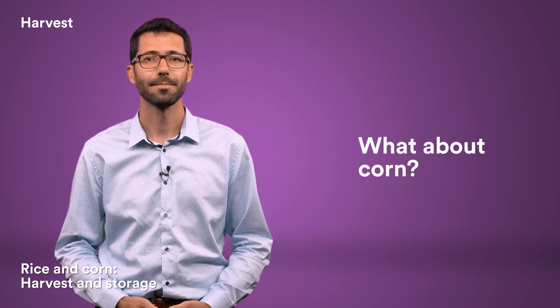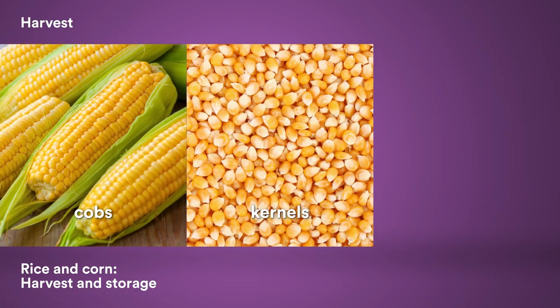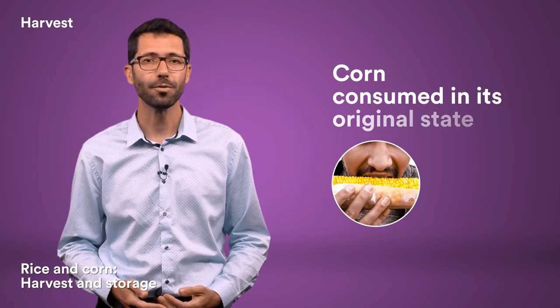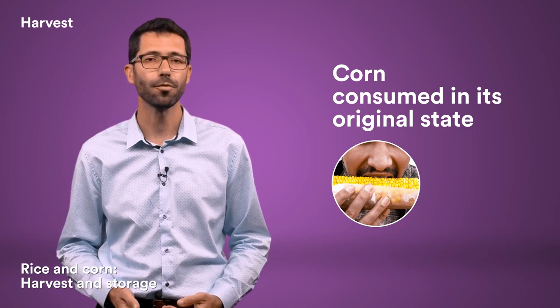What about corn? It can be harvested either in cobs or as kernels, but is now more commonly harvested as kernels. This entails a process called shucking, to separate the kernels from the cobs. The cob is then hulled to remove part of the germ and the bran. Corn can also be consumed in its original state, meaning without having undergone any transformations.